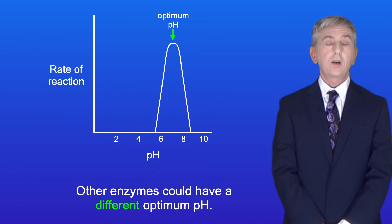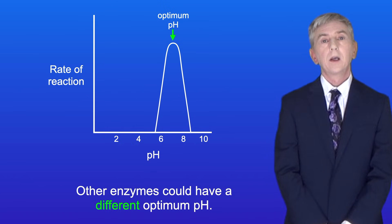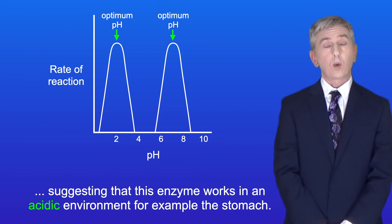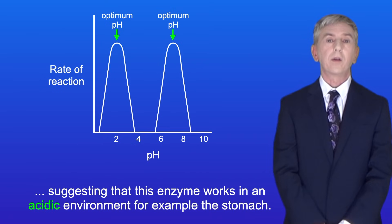Other enzymes could have a different optimum pH. For example, this enzyme has an optimum pH around 2, suggesting that this enzyme works in an acidic environment, for example the stomach.